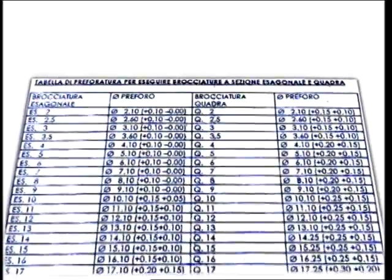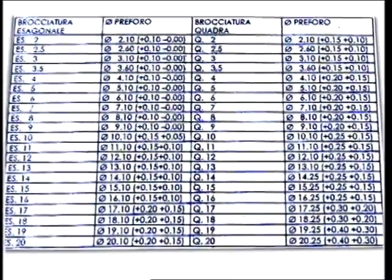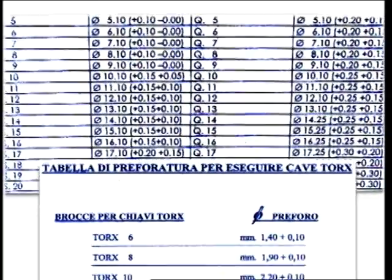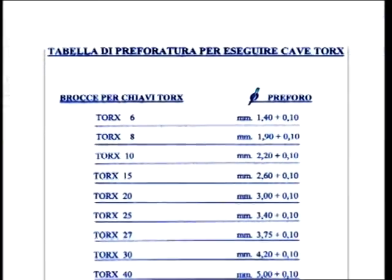Brighetti Mechanica provides pre-broach tables for broaching operations designed to obtain square and hexagonal cross sections and sockets for Torx wrenches.